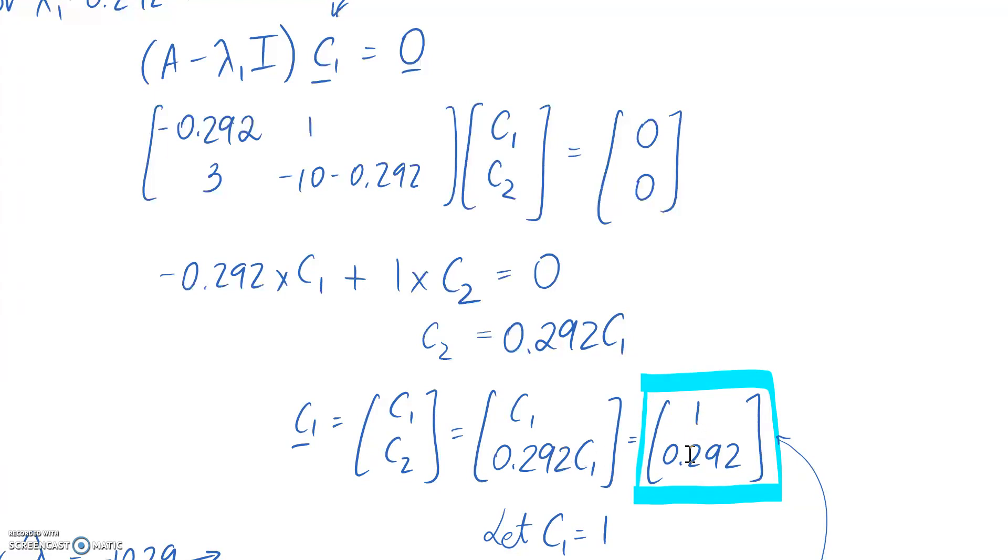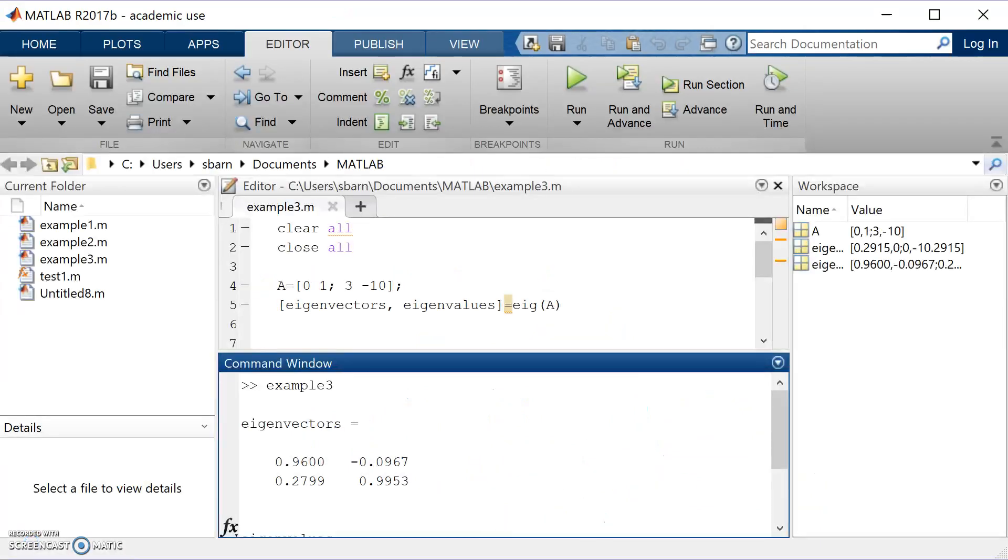So the ratio here, if we do the bottom divided by the top, it's going to be easier. So 0.292 divided by 1 is going to be 0.292. So let's see if we can get that from MATLAB. So if we look here, if we do 0.2799 divided by 0.96, we should end up with the same ratio as what we had from the manual solution.